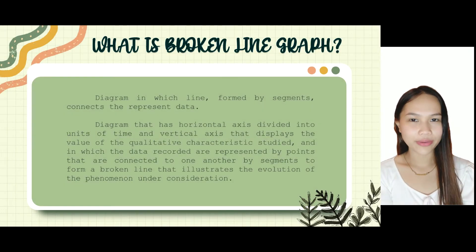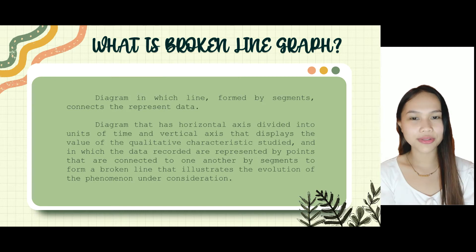What is a broken line graph? It is a diagram in which line formed by segments connects the represent data. It is also a diagram that has horizontal axis divided into units of time and vertical axis that displays the qualitative characteristics studied, and in which the data recorded are represented by points that are connected to one another by segments to form a broken line that illustrates the evolution of phenomenon under consideration.